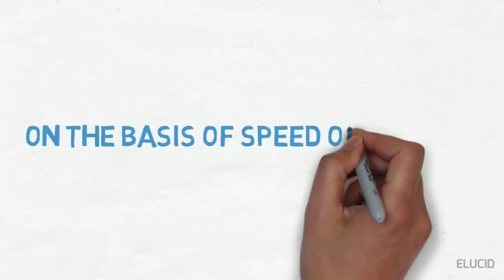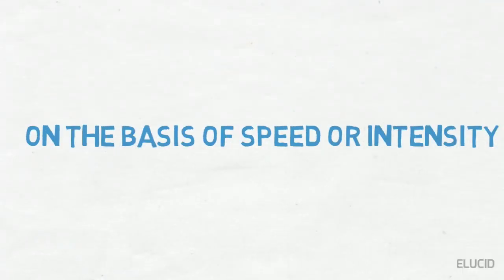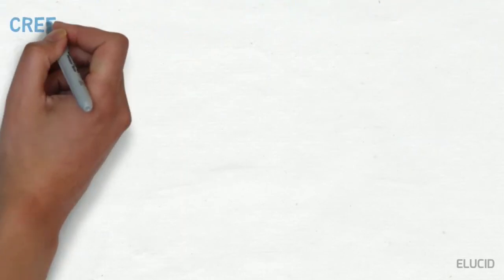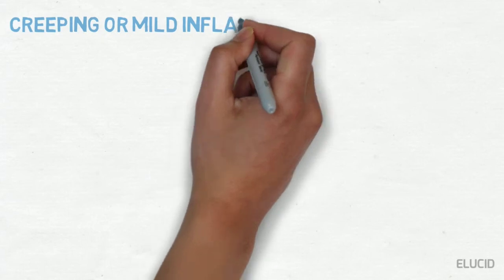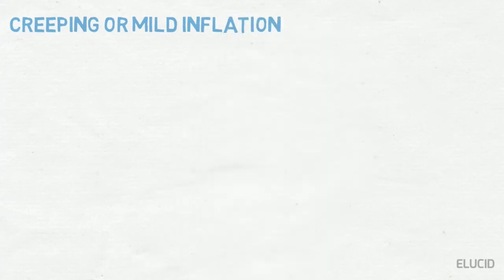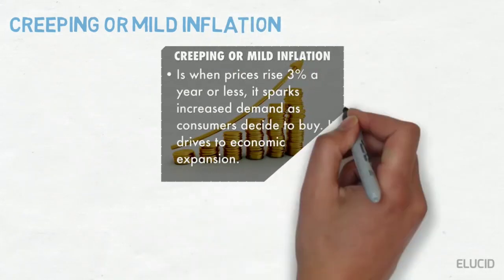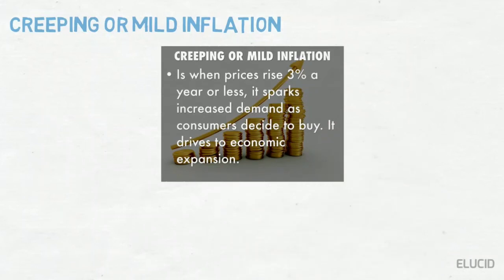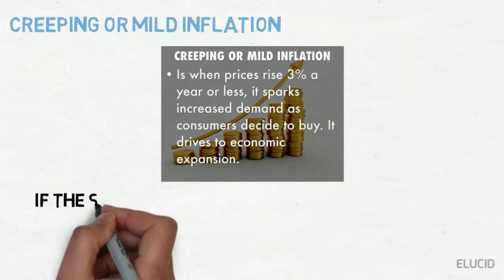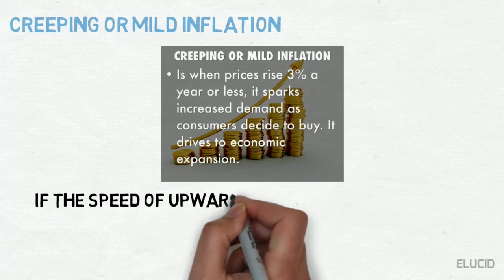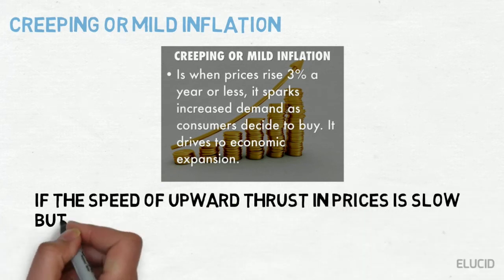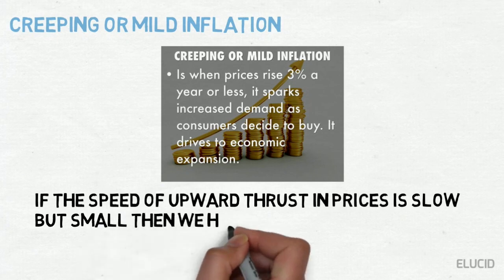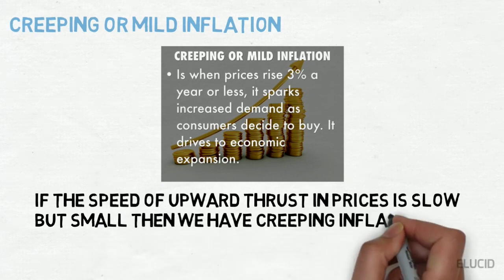On the basis of speed or intensity: creeping or mild inflation. This is also known as moderate inflation. If the speed of upward thrust in prices is slow but small, then we have creeping inflation. To some, a creeping or mild inflation is one when annual price rise varies between 2% and 3%.